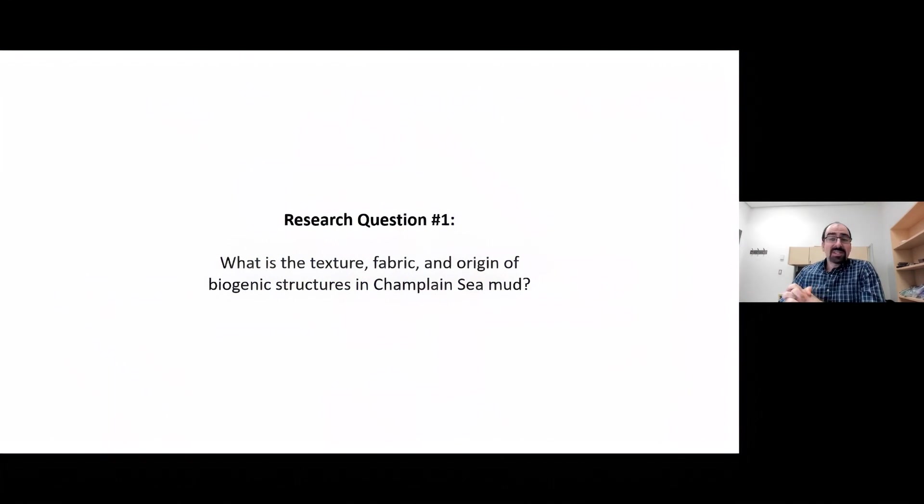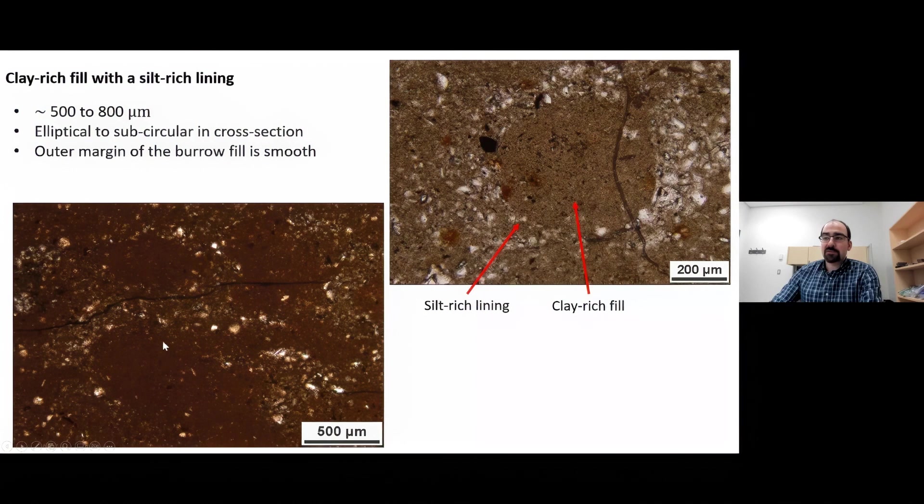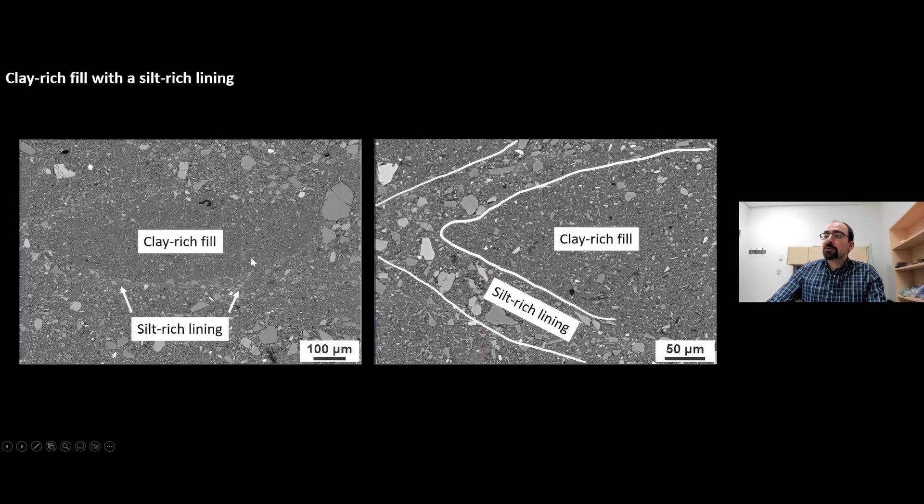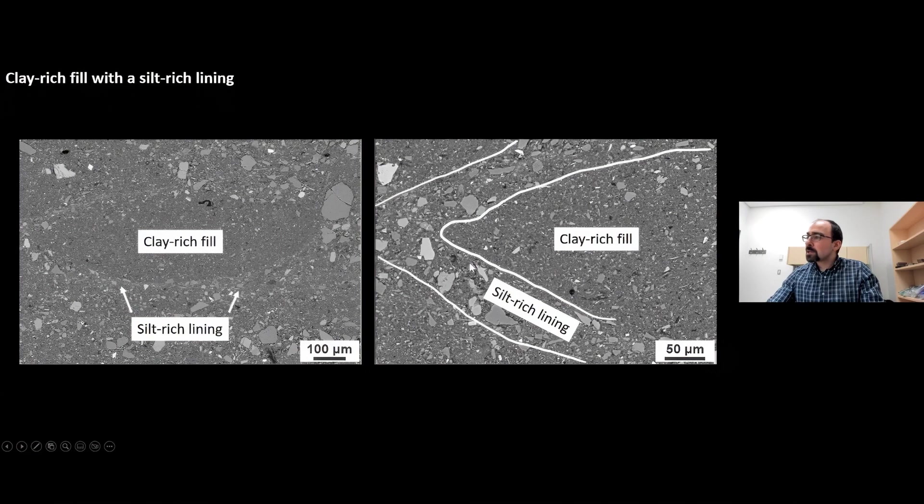This microtextural data opened the avenue for a number of research questions. First, what is the texture, fabric, and origin of biogenic structures in Champlain Sea mud? A number of different burrow fills were recognized based on texture and fabric of the sediment. The first is a burrow fill consisting of a clay-rich fill marked by a silt-rich lining. These burrows are several hundreds of micrometers in diameter, often elliptical to sub-circular in cross-section. This photomicrograph shows an assemblage of these clay-rich filled burrows that are lined by silt. At the SEM scale, note the elliptical morphology. The clay-rich fill consists mostly of clay-sized sediment with some dispersed very fine to fine silt, then it's sharply lined with its silt-rich lining.